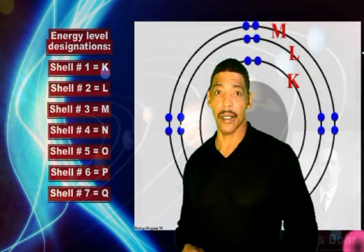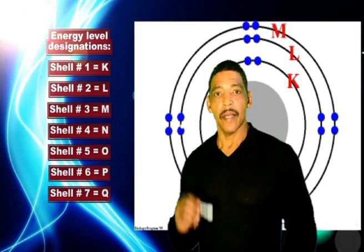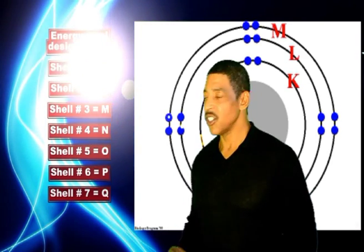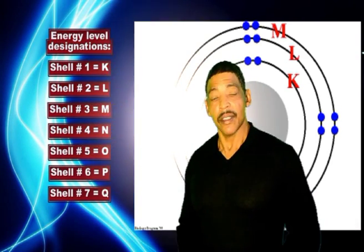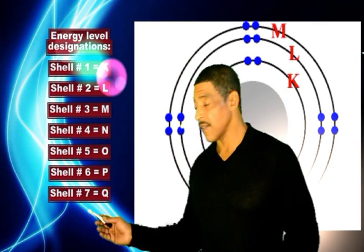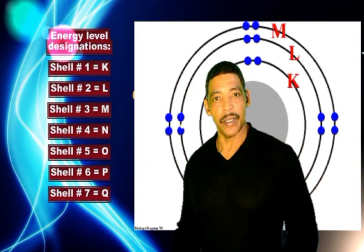In a Bohr model of an atom, the nucleus is surrounded by electron shells. The Bohr model is also known as the planetary model, where the nucleus represents the sun and the electron shells represent the orbits of the planets. The electron shells may be designated by using either letters or numbers. If letters are used, shell number one is the K shell, and shell number seven for a very large atom is the Q shell.